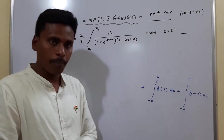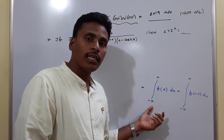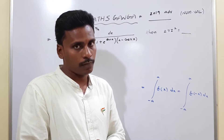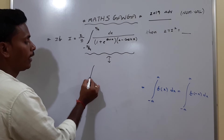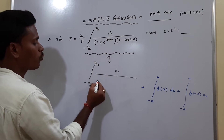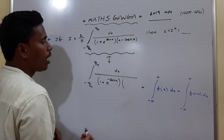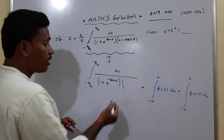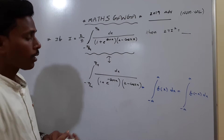To solve this, the first idea is to use the property that the integral from minus a to a of f(x) dx equals the integral from minus a to a of f(minus x) dx. So this integral is also equal to the integral from minus π/4 to π/4 of dx divided by (1 + e^(minus sin x)) times (2 minus cos(minus 2x)). Since cos(minus 2x) equals cos 2x, no change happens there, giving us 2 minus cos 2x.